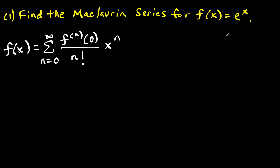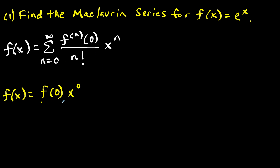For the first question, we want to find the McLaurin series for f of x equals e to the x. This is probably one of the easiest functions to start with. Here's our formula, and I want to write the expanded form of this series. Notice when we plug in n equals zero, the f-n of zero stands for the nth derivative at zero. So if I'm taking the zero derivative, that means I'm just starting with the function f of x, so I'll have f of zero.